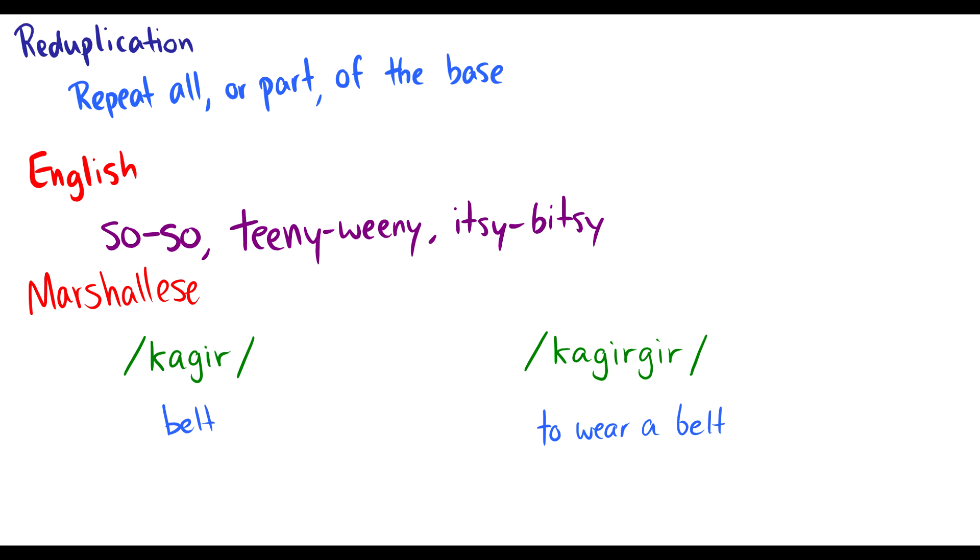Reduplication. So reduplication is another process, another morphological process where we take part of the word and we repeat it again immediately after. So in English, we could say it was so-so or teeny-weeny, itsy-bitsy. So with so-so, we repeat the whole first word. Teeny-weeny, we repeat the -eeny part. Itsy-bitsy, we repeat itsy, we add the b for bitsy. So they do mean things. We don't use them that often in English.